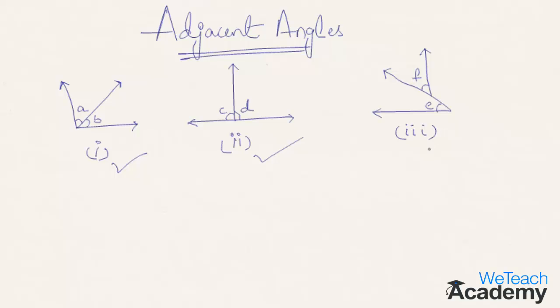In the third example, angle E and angle F are not adjacent angles since the vertex of angle F which lies here and the vertex of angle E that is here. Hence, they don't have a common vertex. Therefore, these are not adjacent angles.